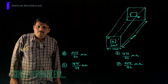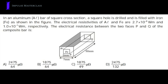Students, it is time for you to solve a problem. In an aluminum bar of square cross section, a square hole is drilled and filled with iron as shown in the figure. The electrical resistivities of aluminum and iron are 2.7×10⁻⁸ ohm·meter and 1.0×10⁻⁷ ohm·meter respectively. Find the electrical resistance between the two faces P and Q of the composite bar. Options: A) 2475/64 micro-ohm, B) 1875/64 micro-ohm, C) 1875/49 micro-ohm, D) 2475/132 micro-ohm.